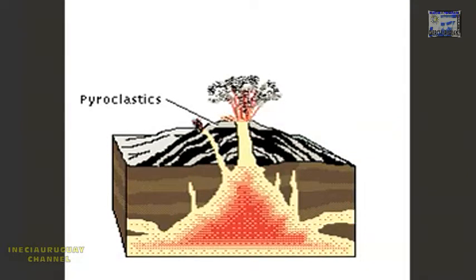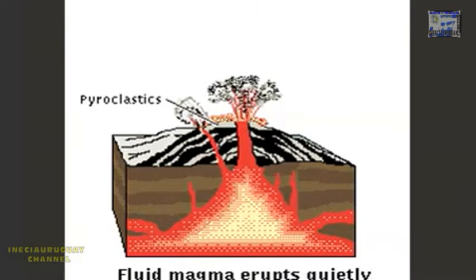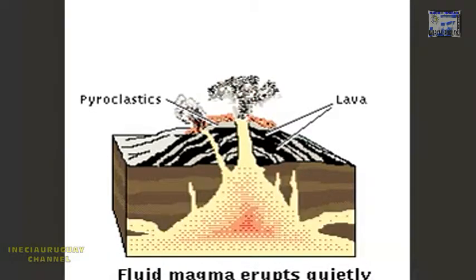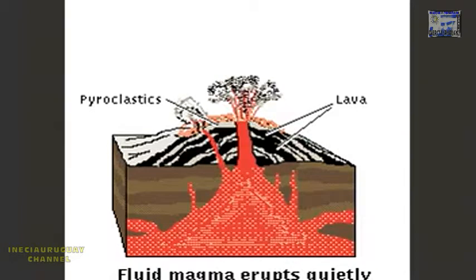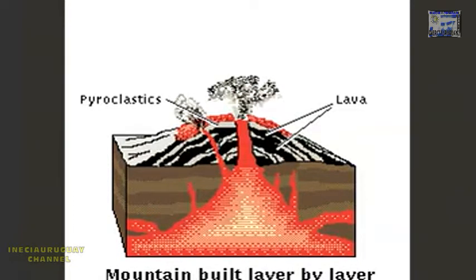When the magma is more fluid and contains less gas, then eruptions are quiet. Molten rock, or lava, spills out of the volcano and cools on its slopes.